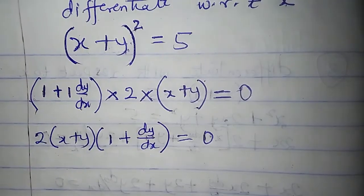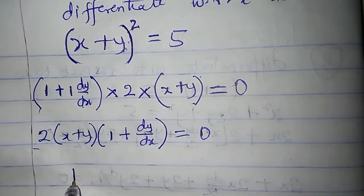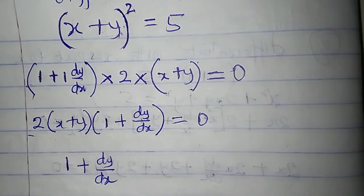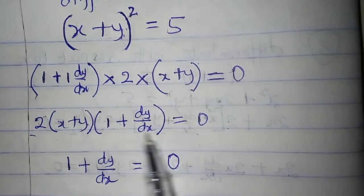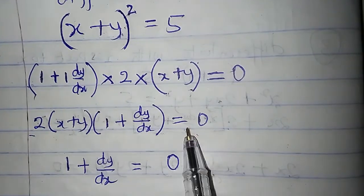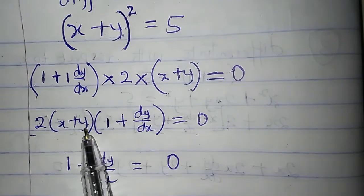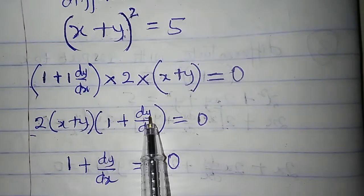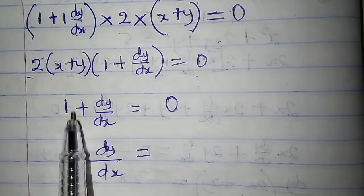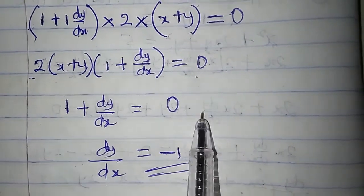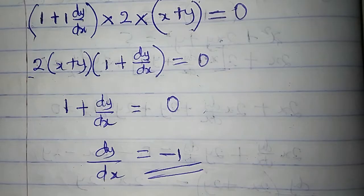We are looking for dy/dx, so divide both sides by 2(x plus y). That cancels on the left, leaving 1 plus dy/dx equal to 0, since 0 divided by 2(x plus y) is still 0. Therefore dy/dx equals 0 minus 1, which is minus 1. This is the second approach to find the derivative of (x plus y) squared equal to 5.